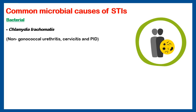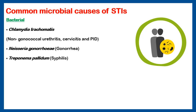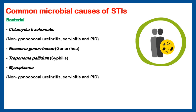Number two: Neisseria gonorrhoeae. These are gram-negative gonococci. They cause a disease called gonorrhea. Treponema pallidum is a spiral bacterium that causes syphilis. There are other less common causes of sexually transmitted infections, like Mycoplasma, which also causes non-gonococcal urethritis, cervicitis, and pelvic inflammatory disease. Ureaplasma causes postpartum fever and chorioamnionitis.